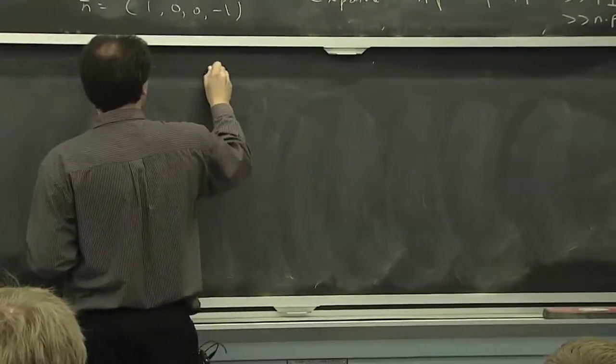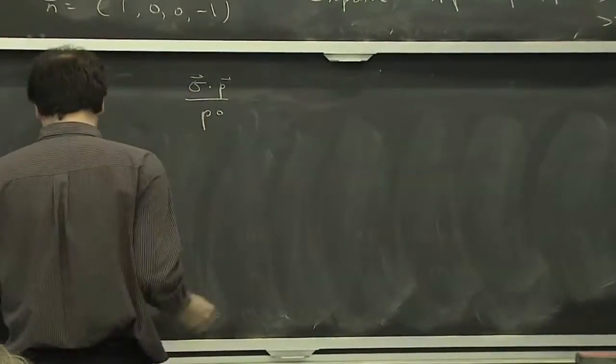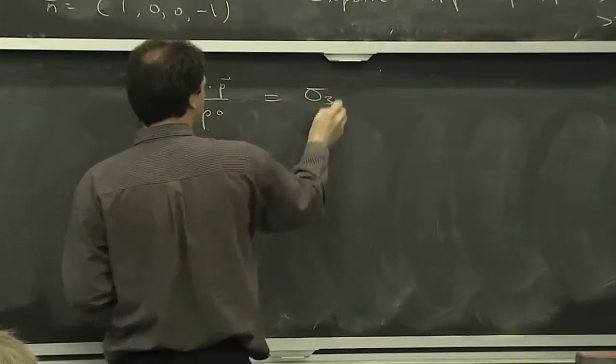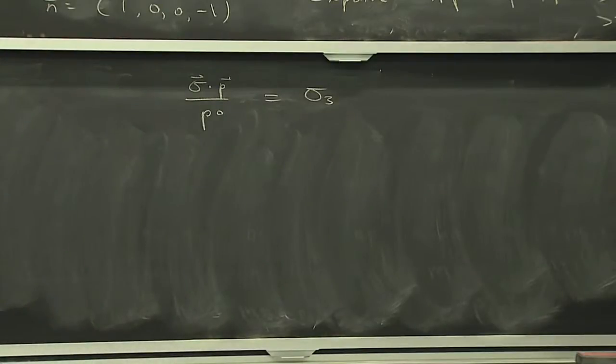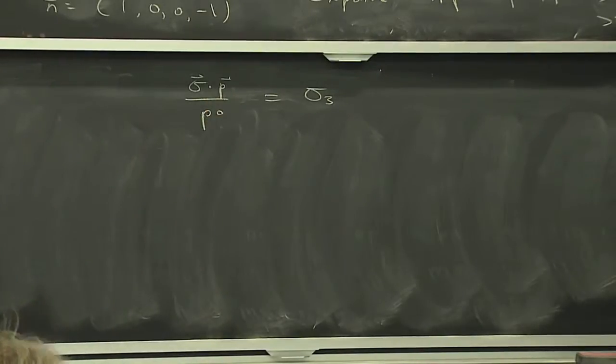And what that means is that you can approximate sigma dot P over P0, these massless particles, as just sigma 3. Because you pick out the P3, that's the big component. The P1 and P2 you can drop. That picks out the sigma 3, and then P3 is also the same size as P0, so you're just getting sigma 3.